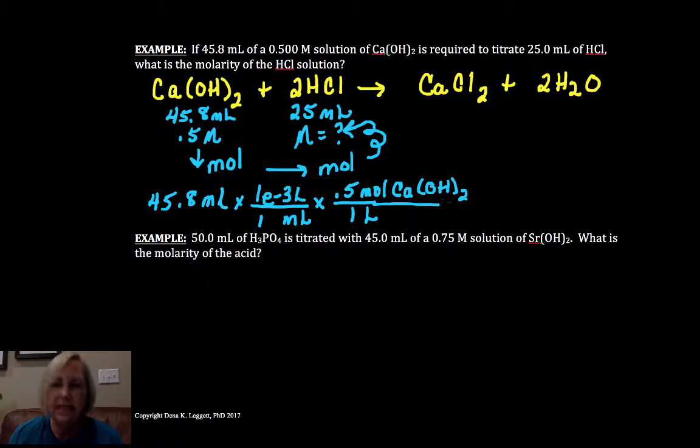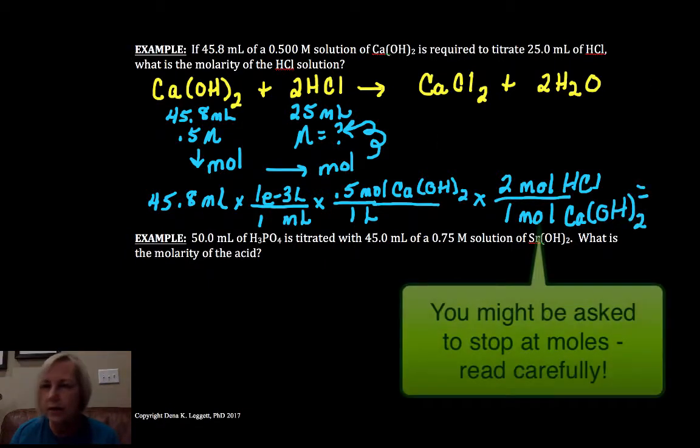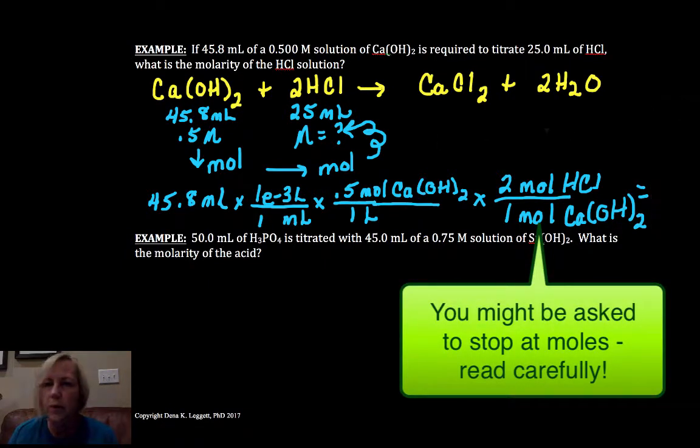Calcium hydroxide: for every one liter, that's what molarity means. You can use molarity as a conversion factor just like we've used density for example. Now I need my mole ratio. It's going to require two moles of hydrochloric acid for every one mole of calcium hydroxide. That gives us our moles.